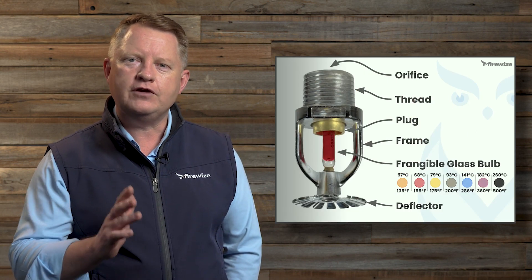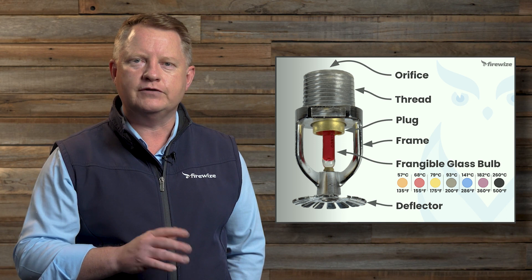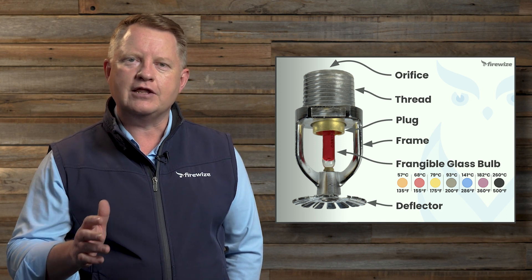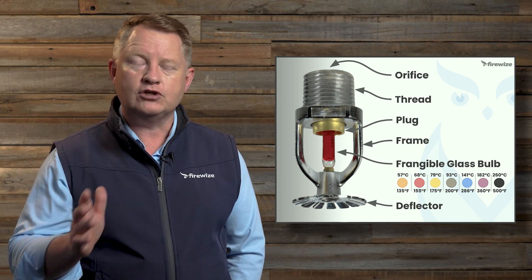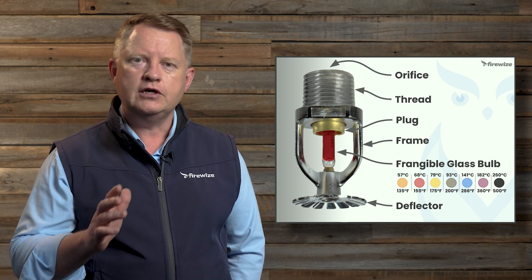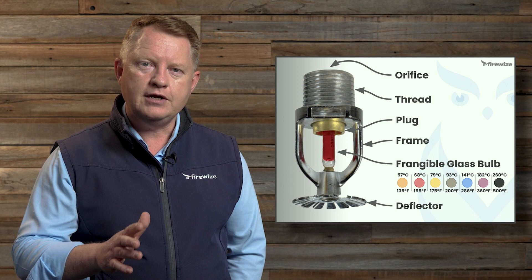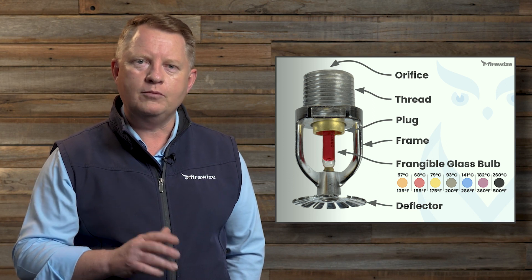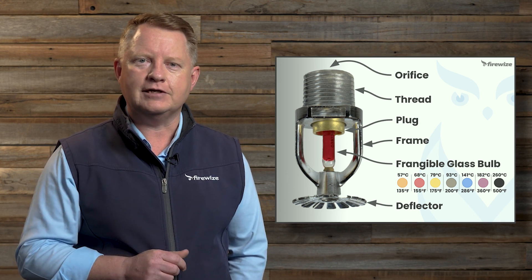There are five key components of a standard sprinkler head. These are the frame and its orifice, the thread, the plug, the glass bulb and the deflector.